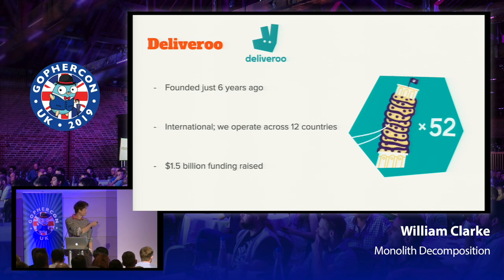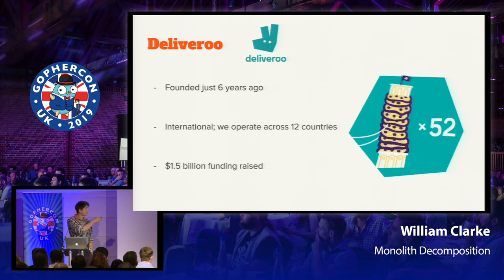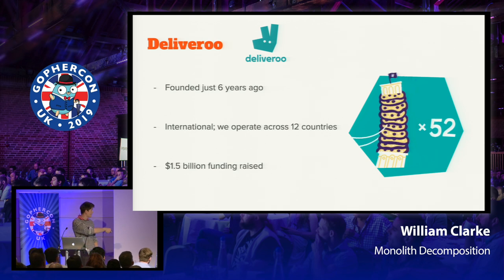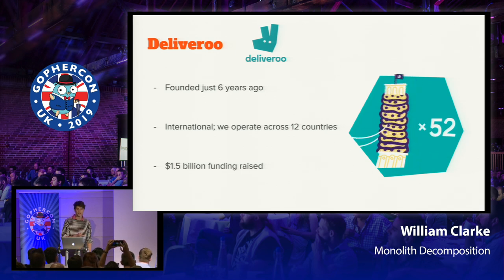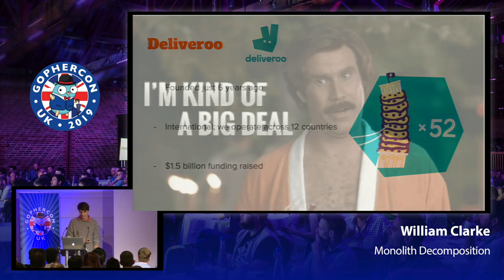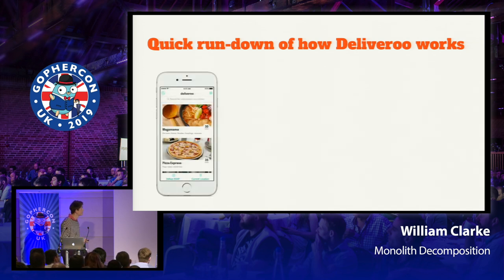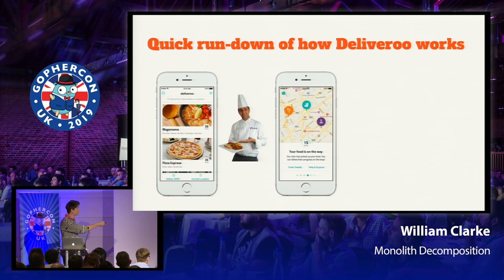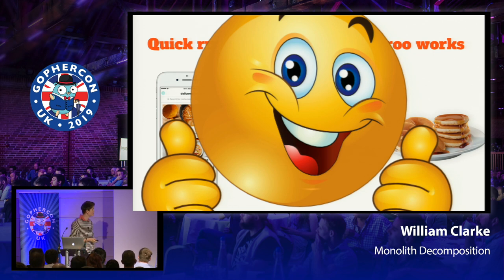Deliveroo was founded just six years ago, operates in 12 countries. In the last three months they've delivered a staggering number of pizzas worth of orders, and it's got an astonishing amount of funding raised. So that in six years is pretty amazing. If anyone doesn't know Deliveroo, this is how it works: you are hungry, you decide what to eat, you choose something, a nice person makes it for you, the app keeps you updated, a nice delivery person delivers it, and then you get to eat it.